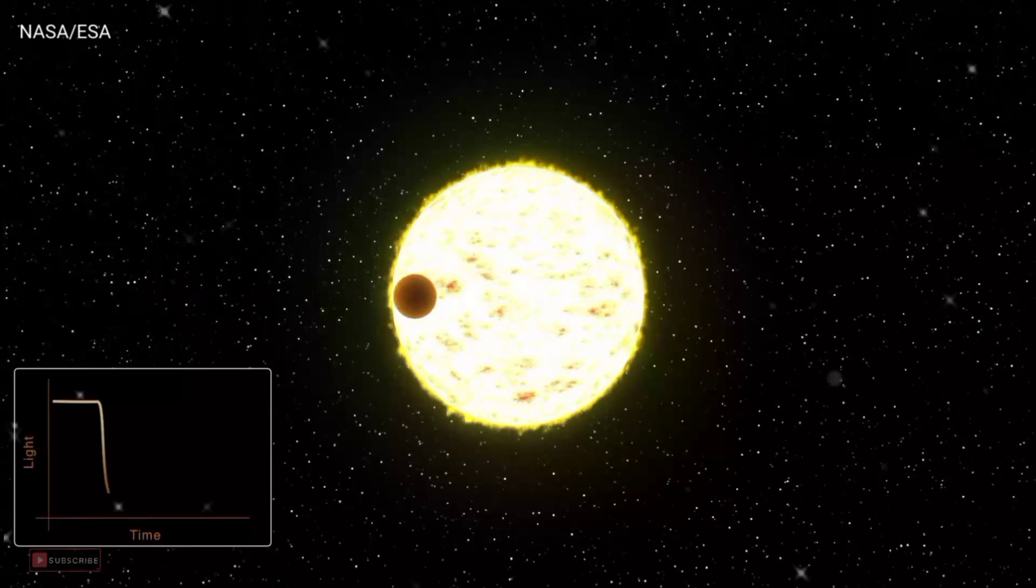Detecting these distant worlds involves various techniques, including radial velocity measurements, transit observations, and gravitational microlensing.